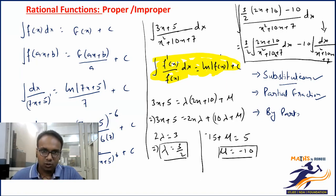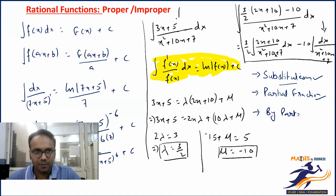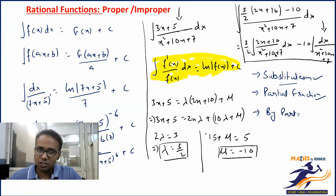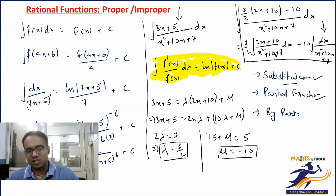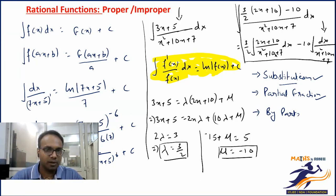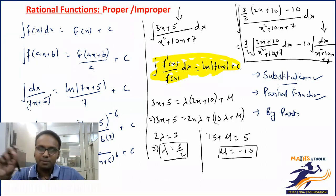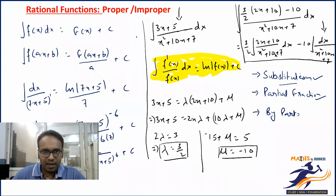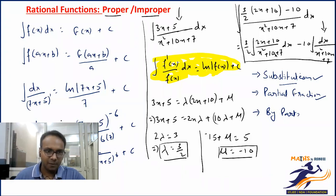Now let's understand what rational functions are. Just like rational numbers have a numerator and denominator, a rational function has a polynomial function on top and a polynomial function on the bottom. Two important words: proper and improper rational functions.